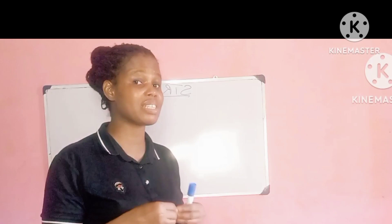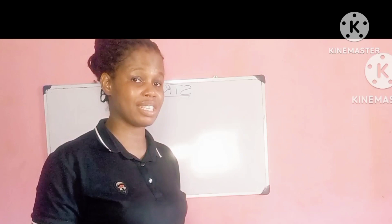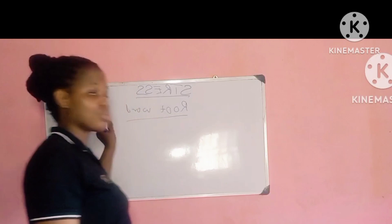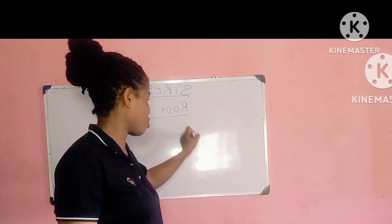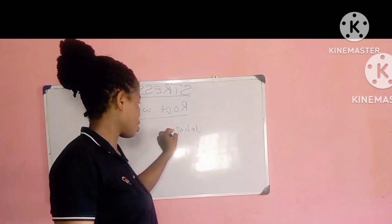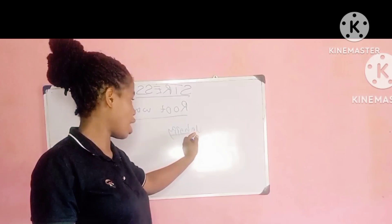The basic thing we need to know before we learn how to identify a stress level in a word is to understand how to identify a root word. A root word is the basic word from which other words are formed. For example, the word 'unhappy' has its root word as 'happy'. It is from 'happy' that you have 'unhappy'.